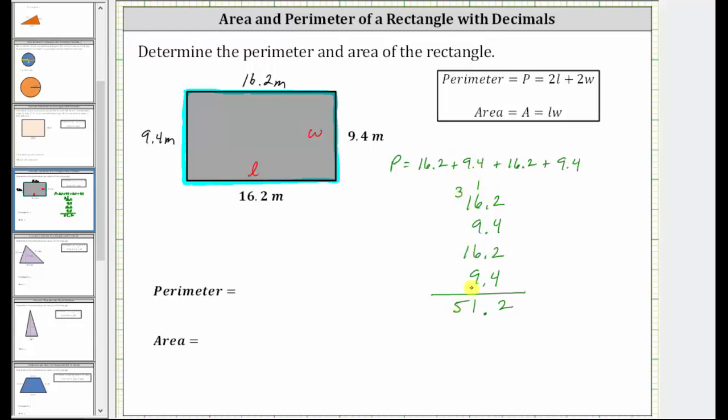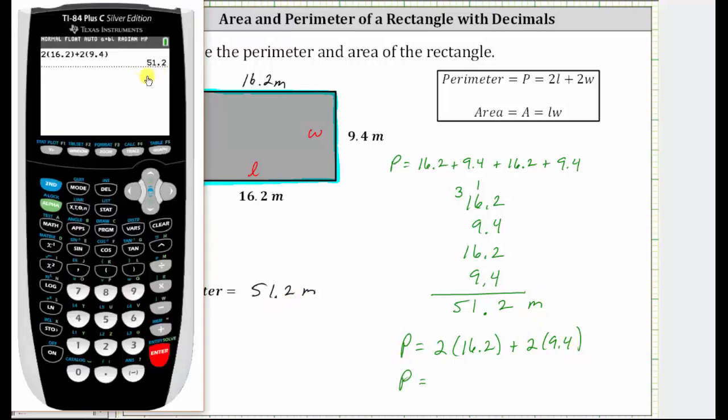So we now know the perimeter is 51.2 meters. Let's go ahead and record this. Now if we did want to use the formula, we would have the perimeter P is equal to 2 times the length of 16.2 meters plus 2 times the width of 9.4 meters. Let's check this on the calculator to make sure we do get 51.2. And notice how we do, which does verify the perimeter is correct.